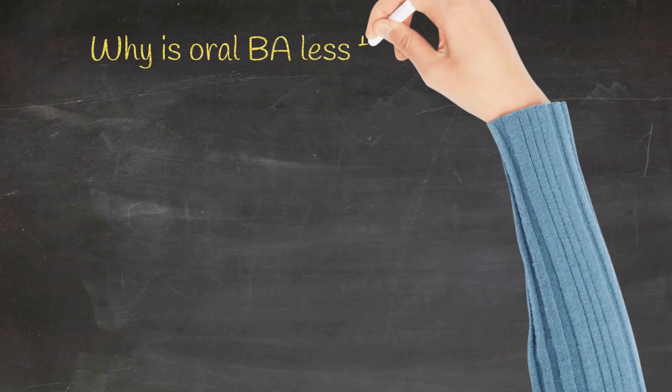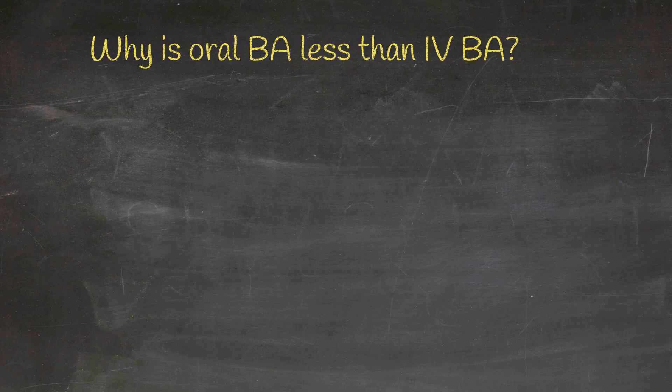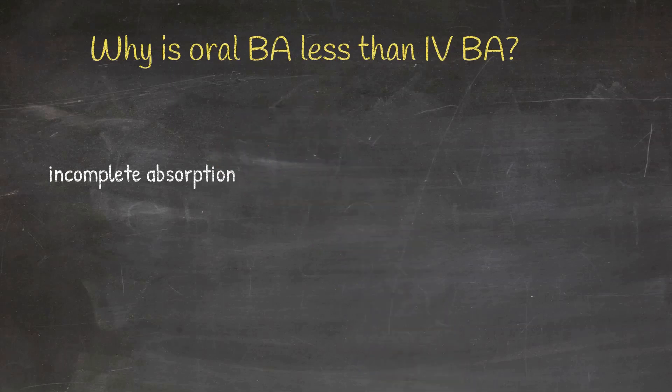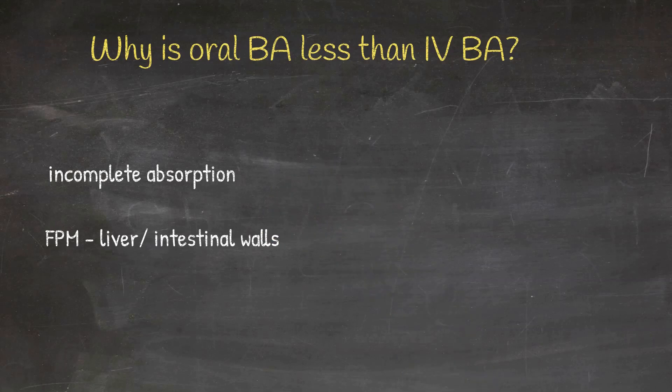So can you guess why is the oral bioavailability less than intravenous bioavailability? One of the reasons is incomplete absorption of the drug from the gut and the other most important reason is first-pass metabolism in the liver or the intestinal walls.